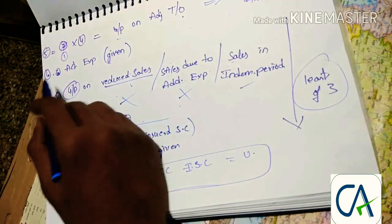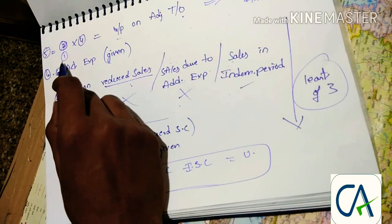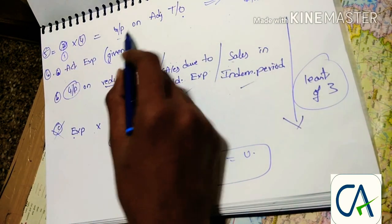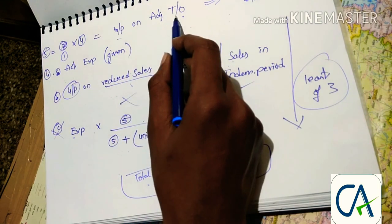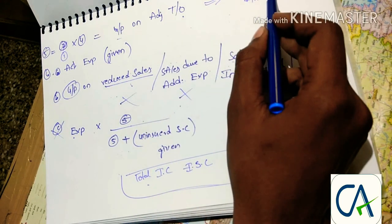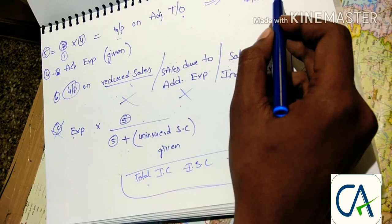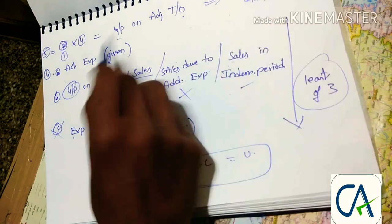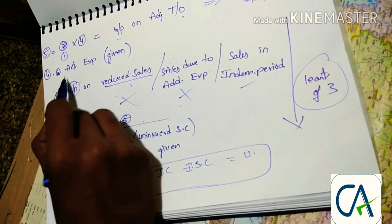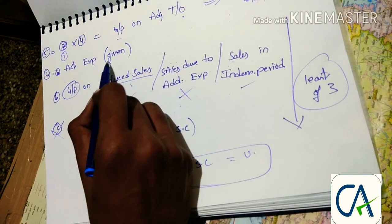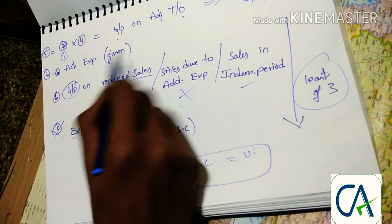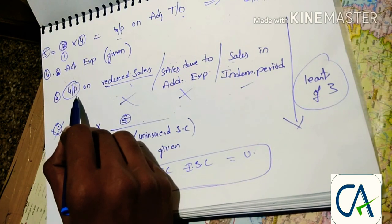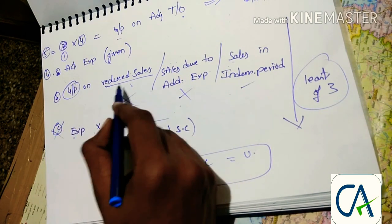Step five: multiply the gross profit ratio from step one by the adjusted turnover from step four. This gives the insurable amount, which is used in the bank claim problem — specifically in step six as well. Step six involves actual expenses given in the question. There are three types of gross profit treatment in step six.